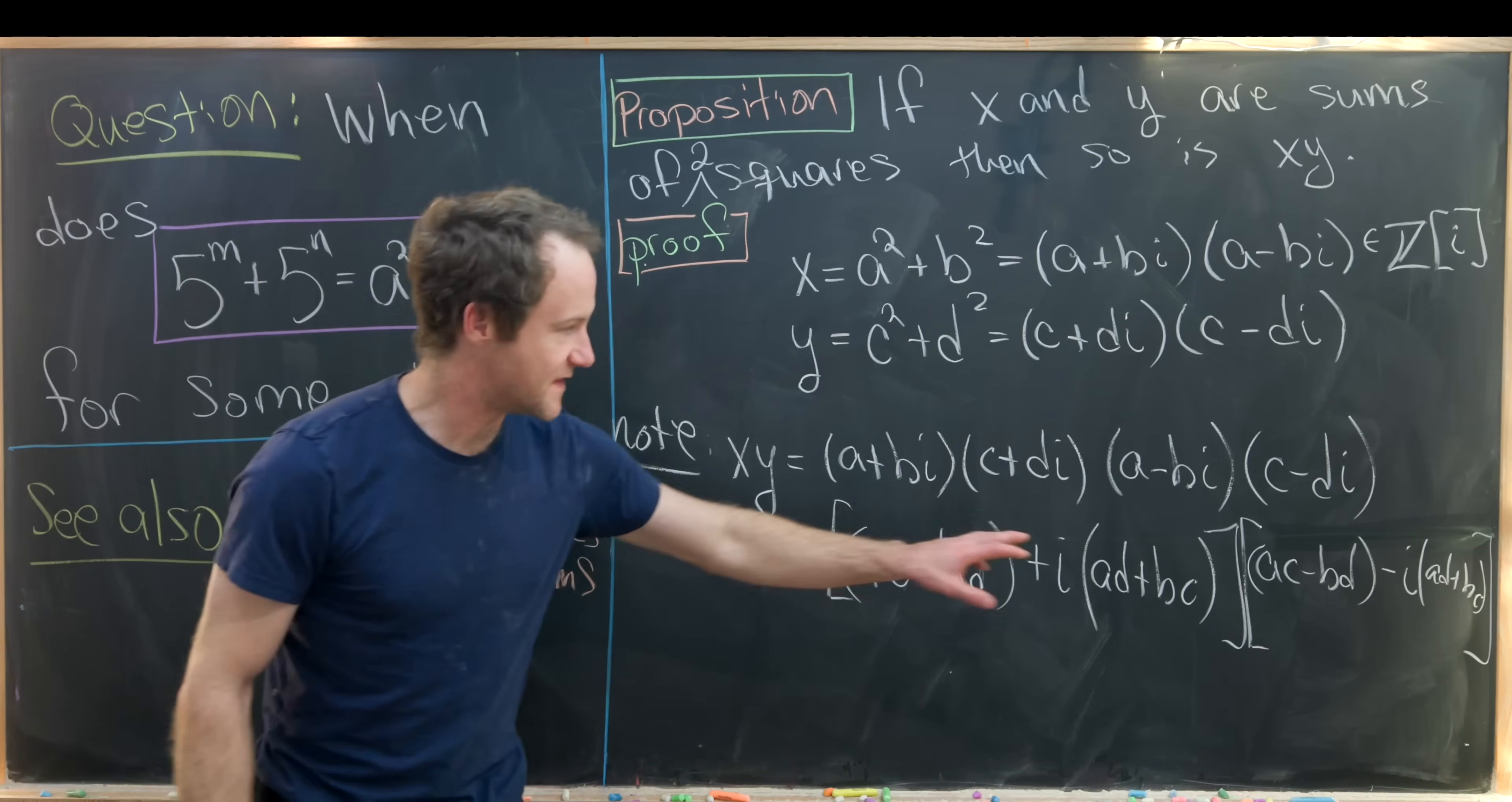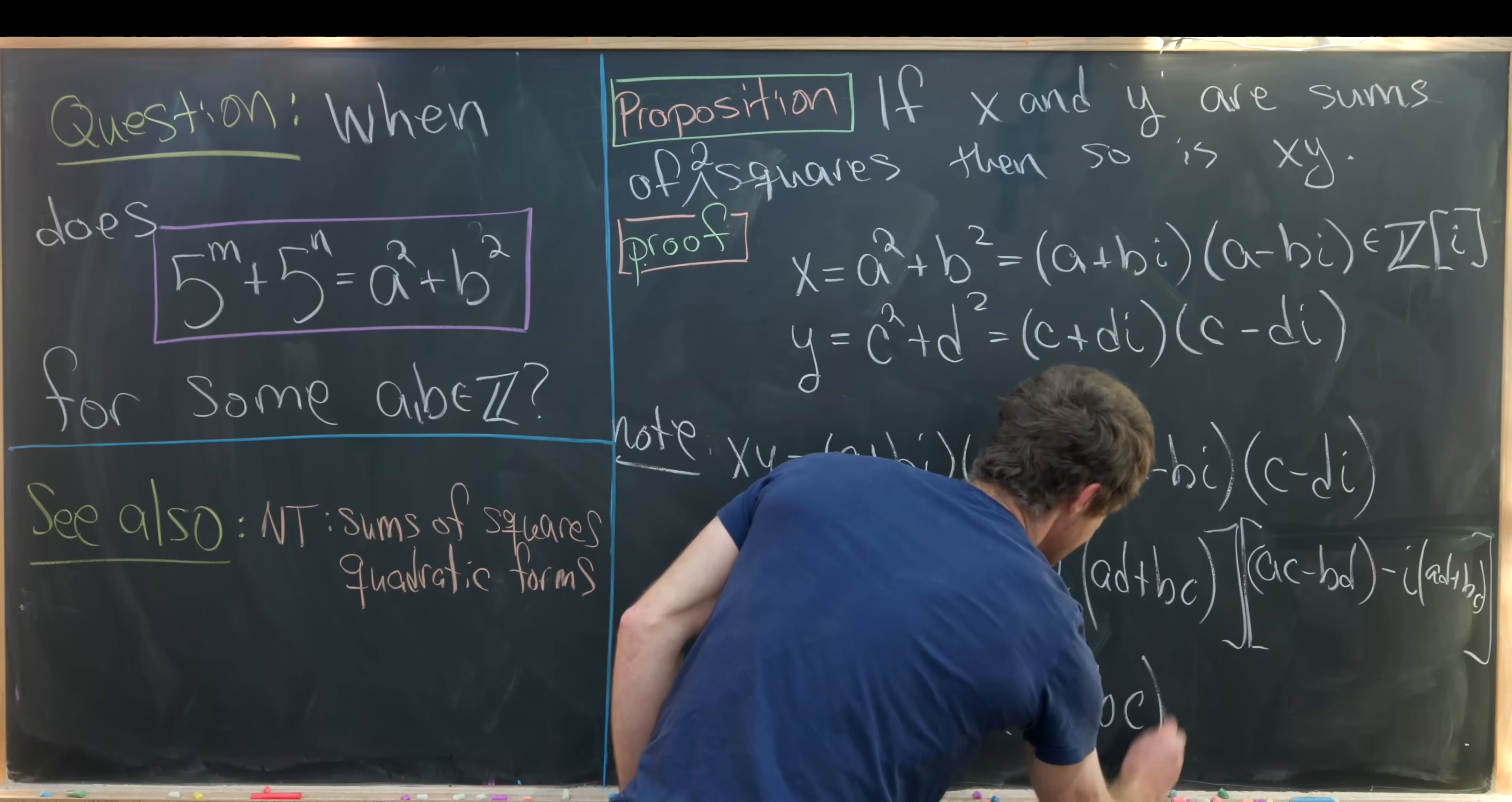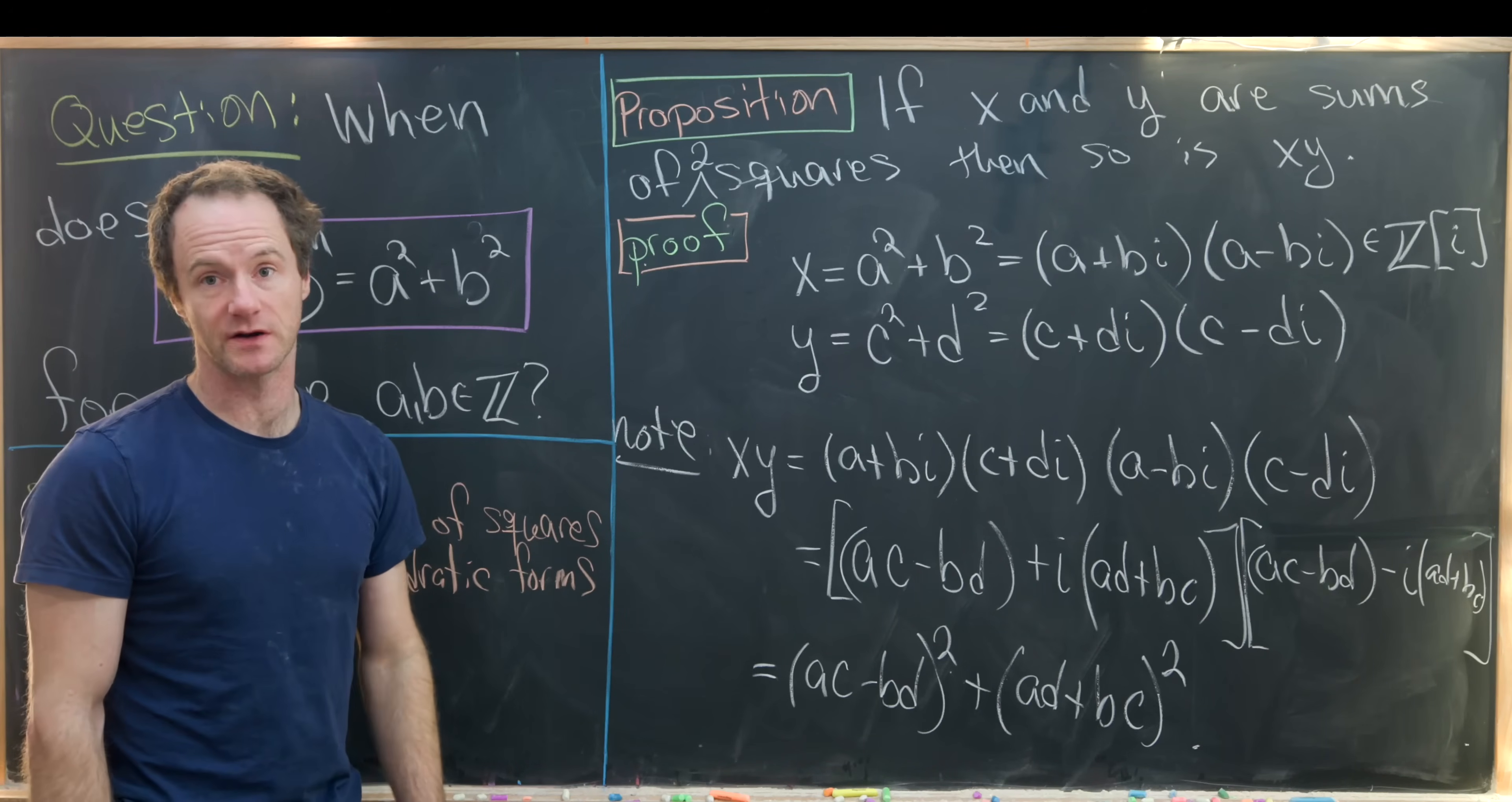But now if we multiply this with its complex conjugate we get exactly what we want. So let's notice we get ac minus bd squared plus ad plus bc squared. And we've done what we wanted to do. We expressed x times y as a sum of two squares under the assumption that x and y could each be expressed as a sum of two squares.